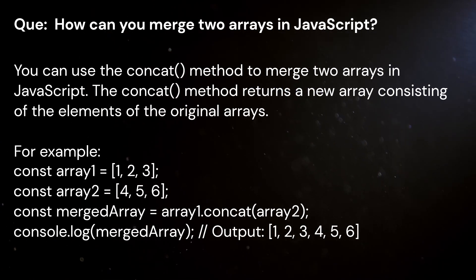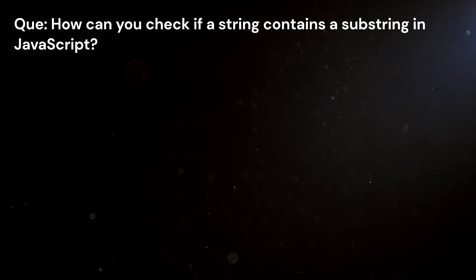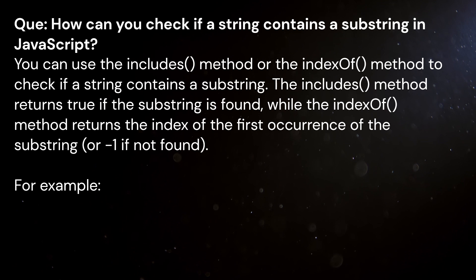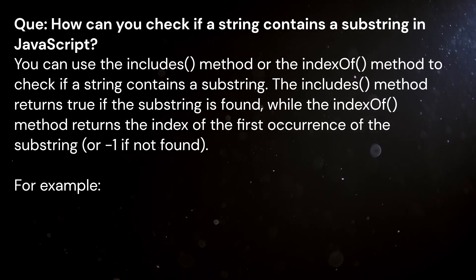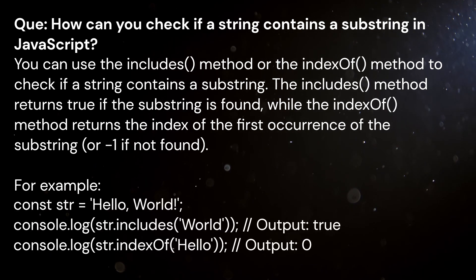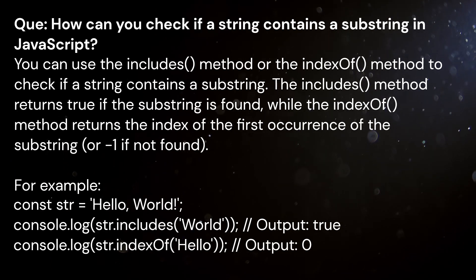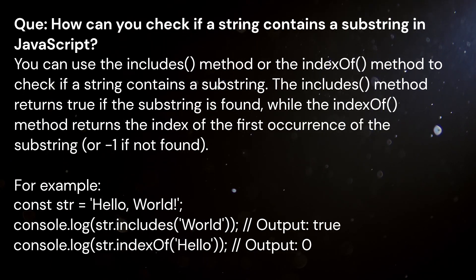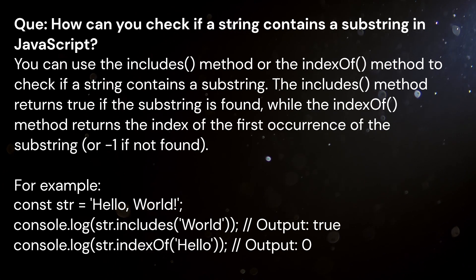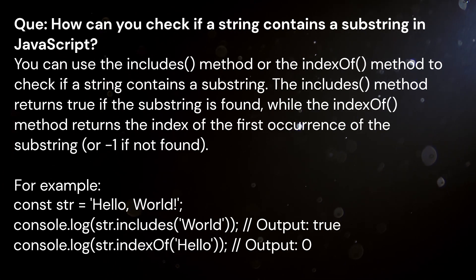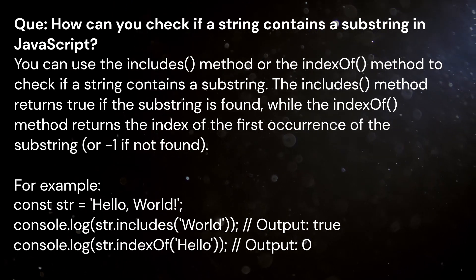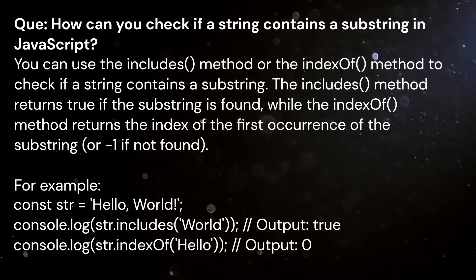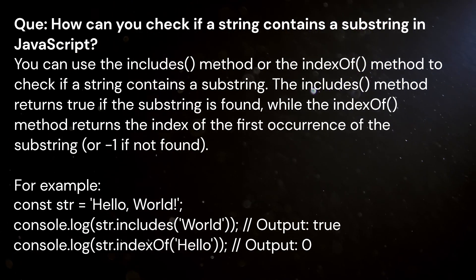Question: How can you check if a string contains a substring in JavaScript? Answer: You can use the includes method or the indexOf method to check if a string contains a substring. The includes method returns true if the substring is found, while the indexOf method returns the index of the first occurrence of the substring, or minus one if not found.